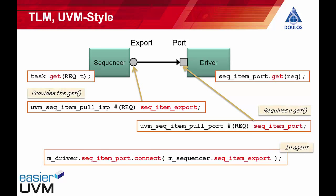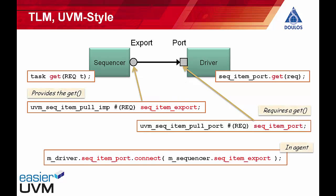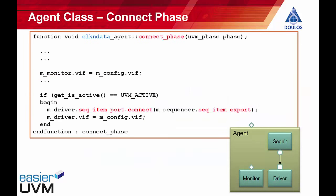The jargon of port and export always confuses people. When you see the term export, you assume something is going out from the sequencer, but what the export reflects is that the sequencer is exporting or providing the get task so the driver can call it. The task is being provided from left to right, the transaction is being passed from left to right, but the get task itself is being called from right to left. Let's take a look at the actual concrete code that comes out of the code generator.